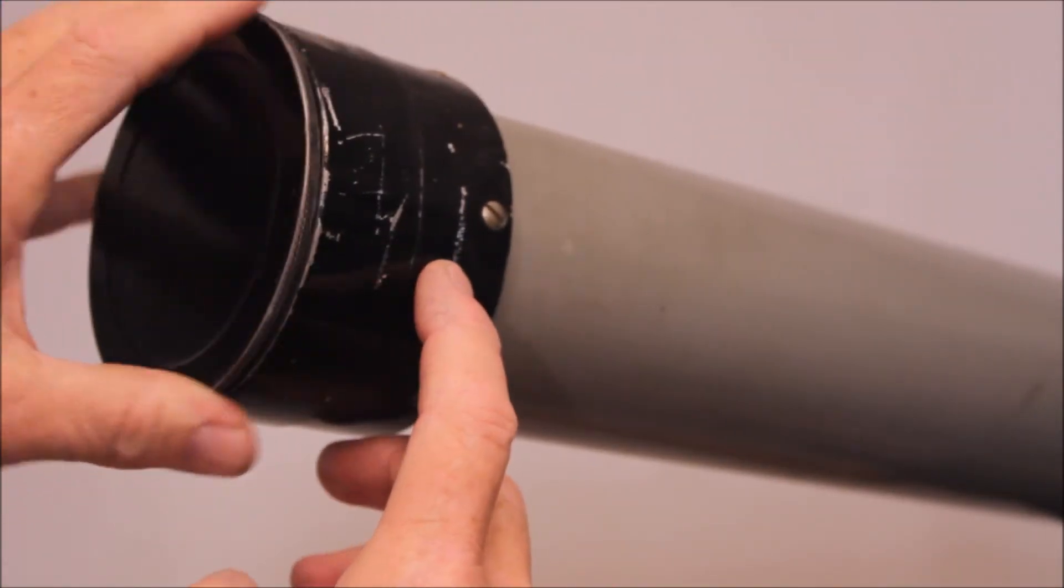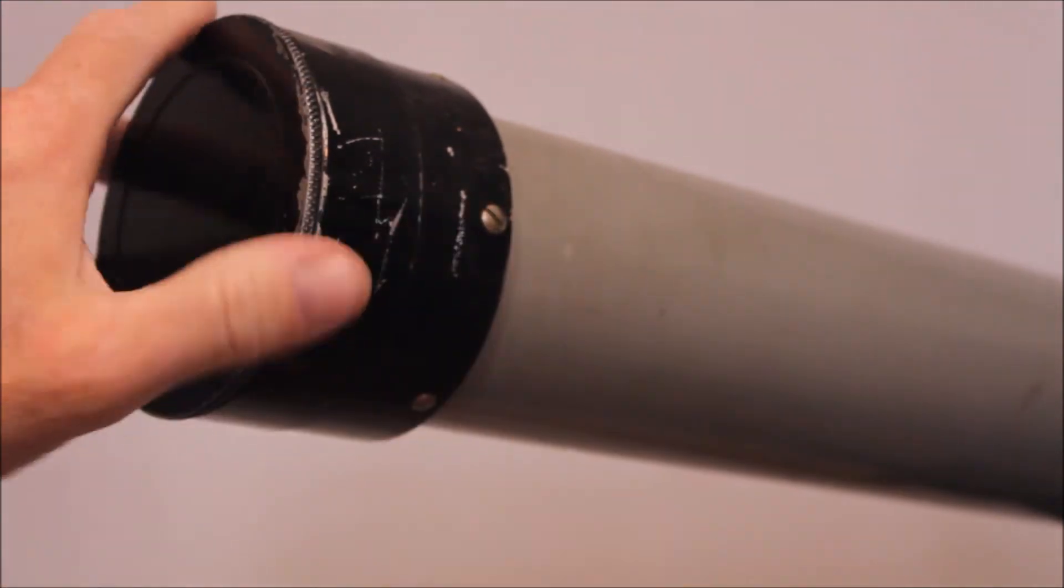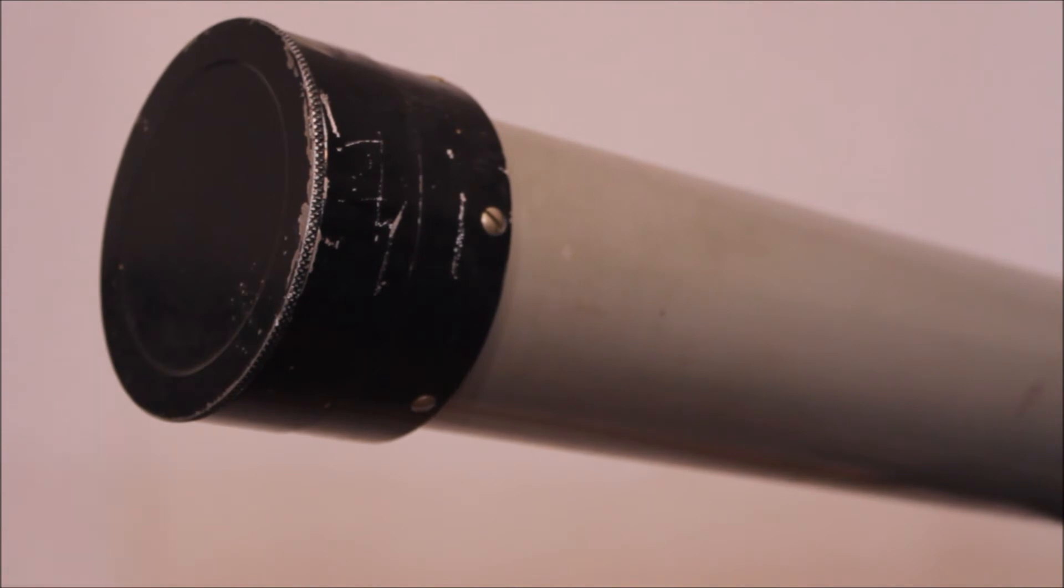Notice that this, compared to the 4-inch cell, this doesn't have the ability to collimate it. So this is what it is. That's the collimation adjustment. None.